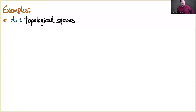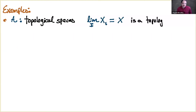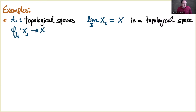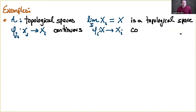Consider that A is the category of topological spaces. In this case, the projective limit of a projective system is a topological space. The transition functions are continuous functions, because the morphisms in the category of topological spaces are continuous functions. Also, the canonical maps from the projective limit to each one of the X_i are continuous functions.